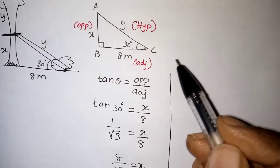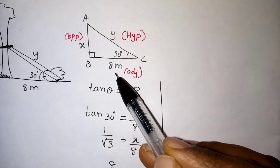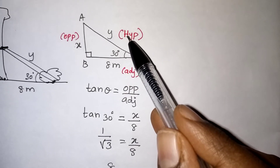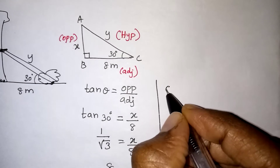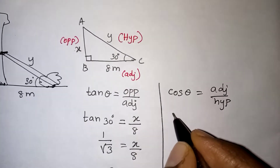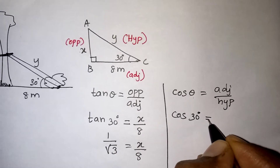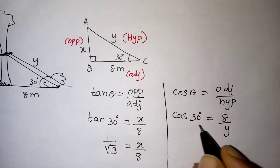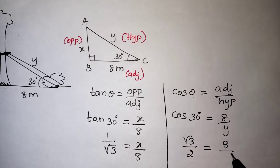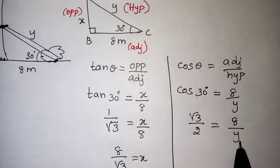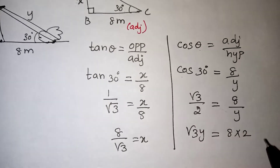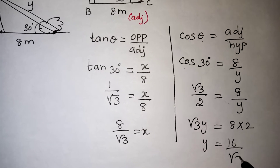Now we need to find y. Here y is the hypotenuse side and 8 is the adjacent side. Adjacent and hypotenuse together give us cos theta, since cos theta equals adjacent over hypotenuse. So cos 30 equals 8 over y. Cos 30 is root 3 over 2, which equals 8 over y. Cross multiplying: root 3 times y equals 16, so y equals 16 by root 3.